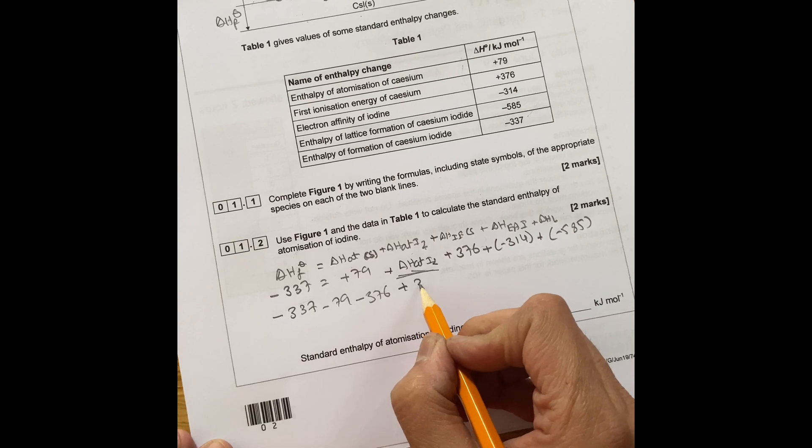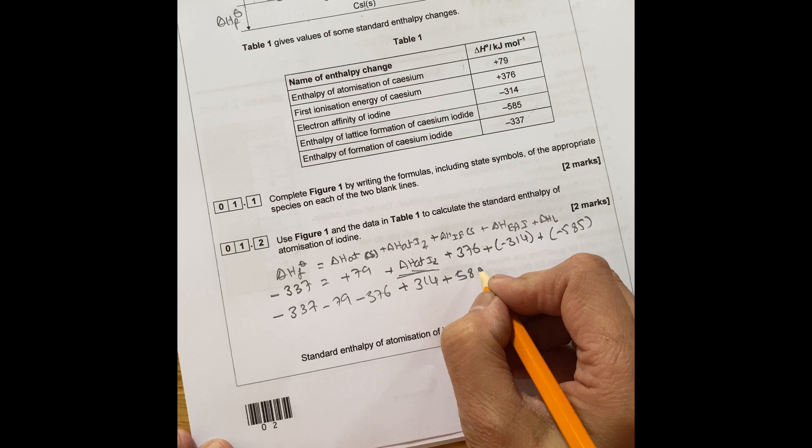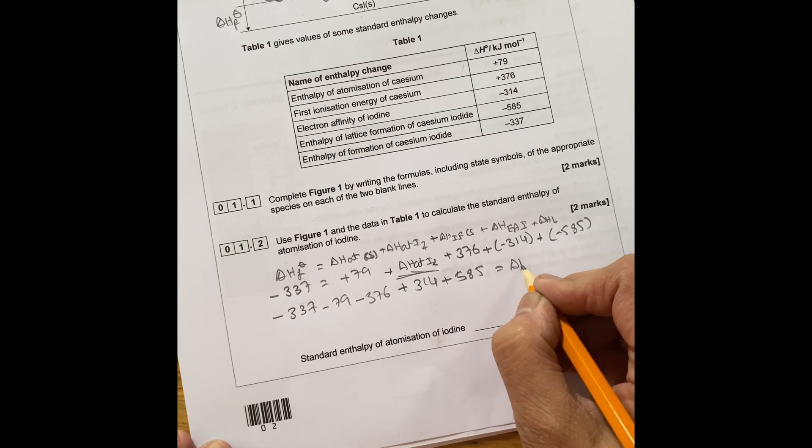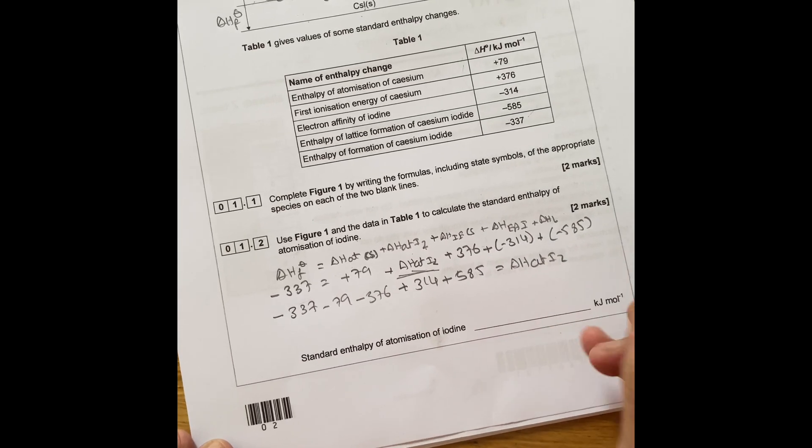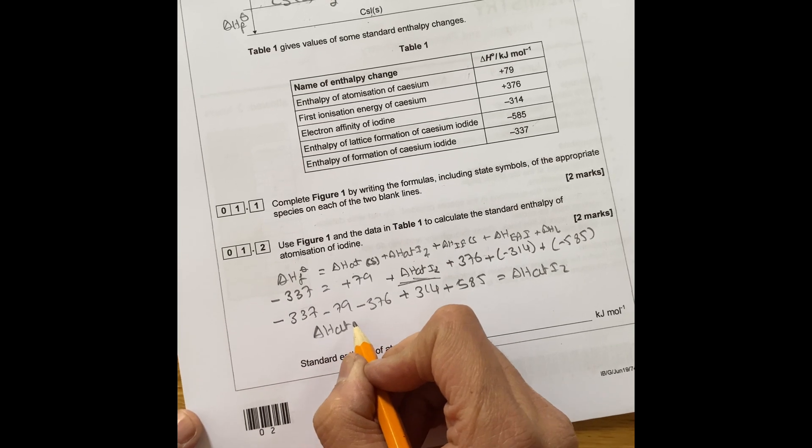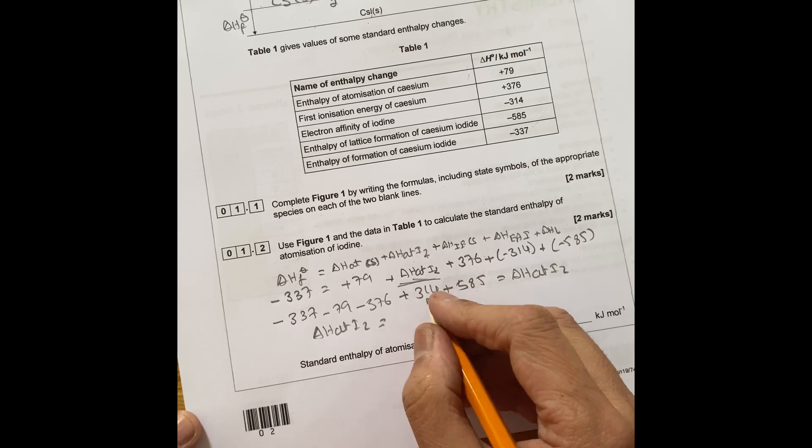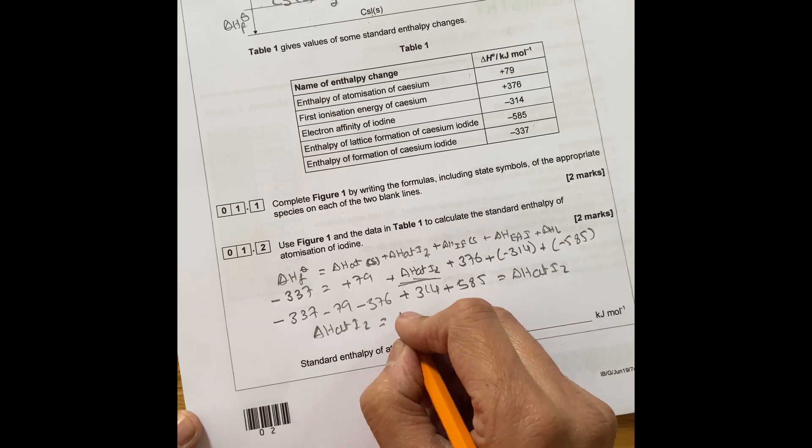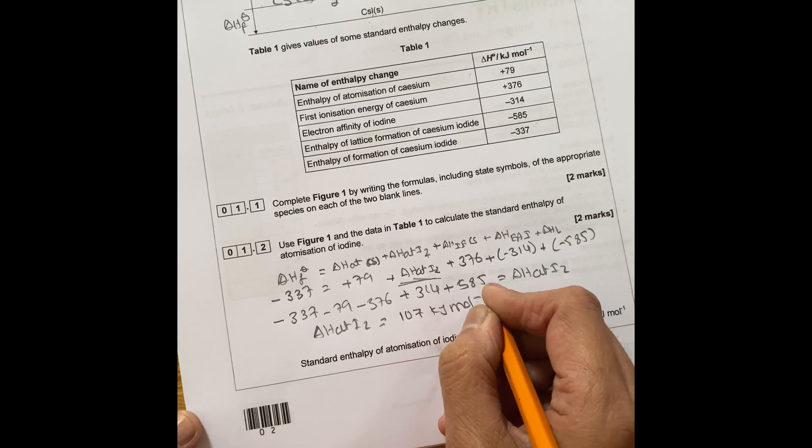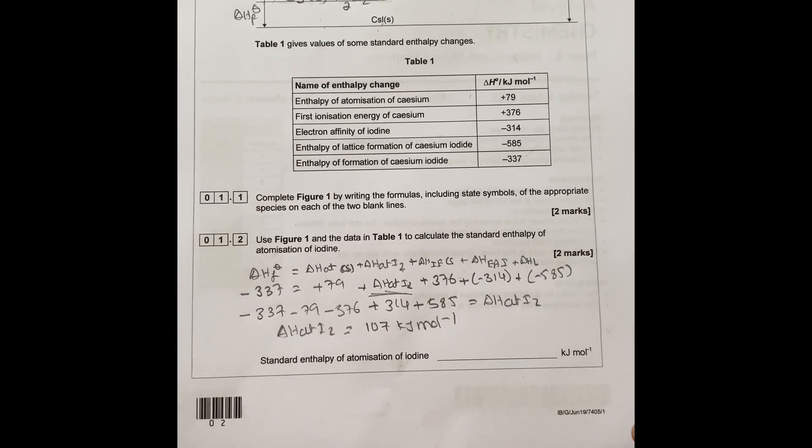Plus 314, so you change the sign, plus 585 equals to delta H atomization of iodine. So if you do this calculation, delta H atomization of iodine, you end up with the value of 107 kilojoules per mole. That's how you do any question about Born-Haber cycle.